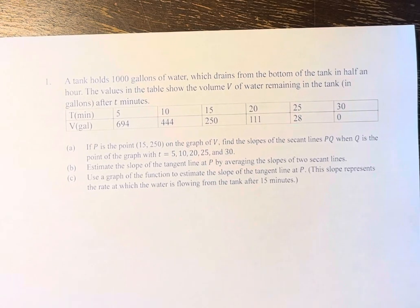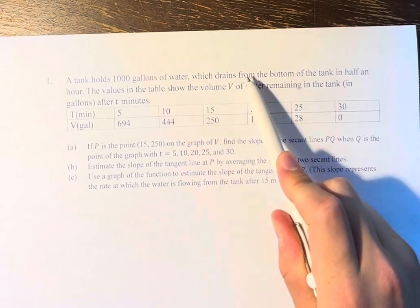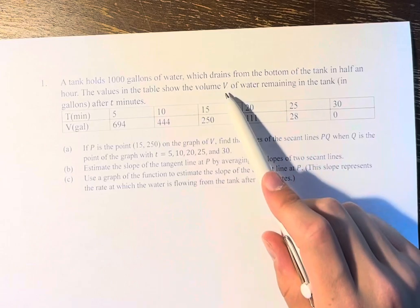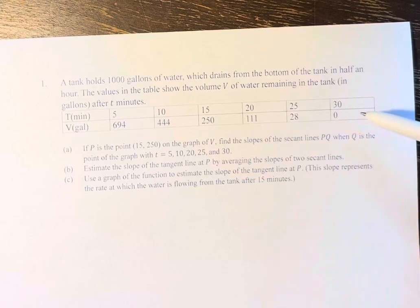Hello and welcome back to another video. In this problem we're told that a tank holds a thousand gallons of water which drains from the bottom of the tank in half an hour. The values on the table show the volume V of water remaining in the tank in gallons after T minutes. So we have these points.